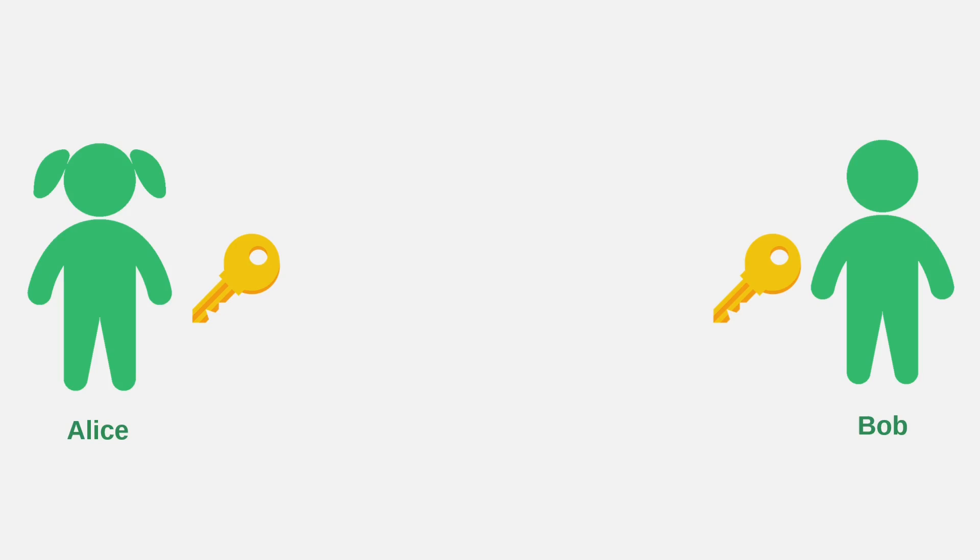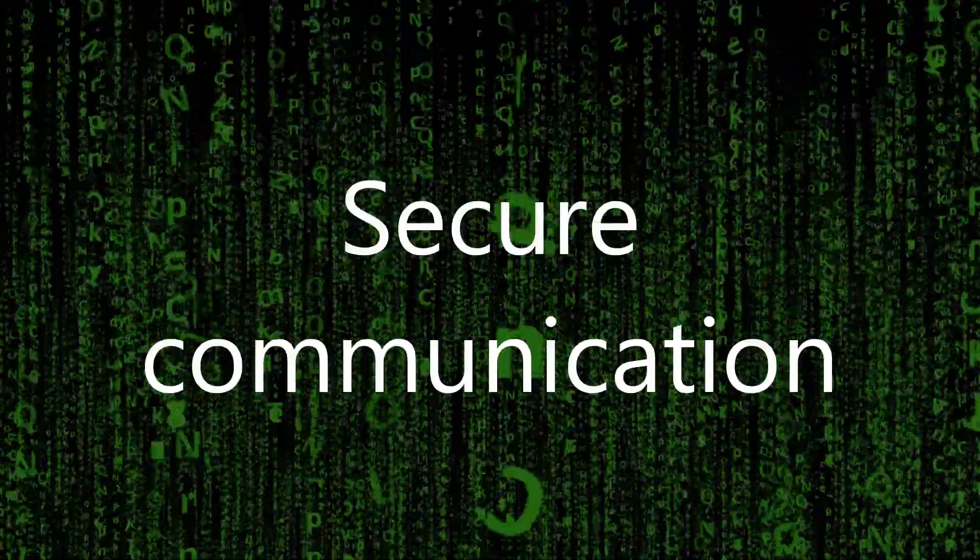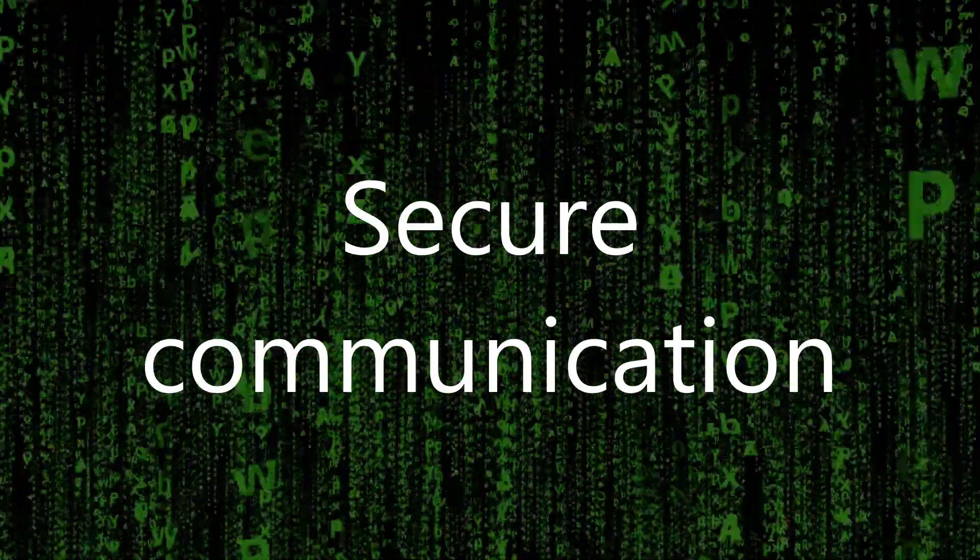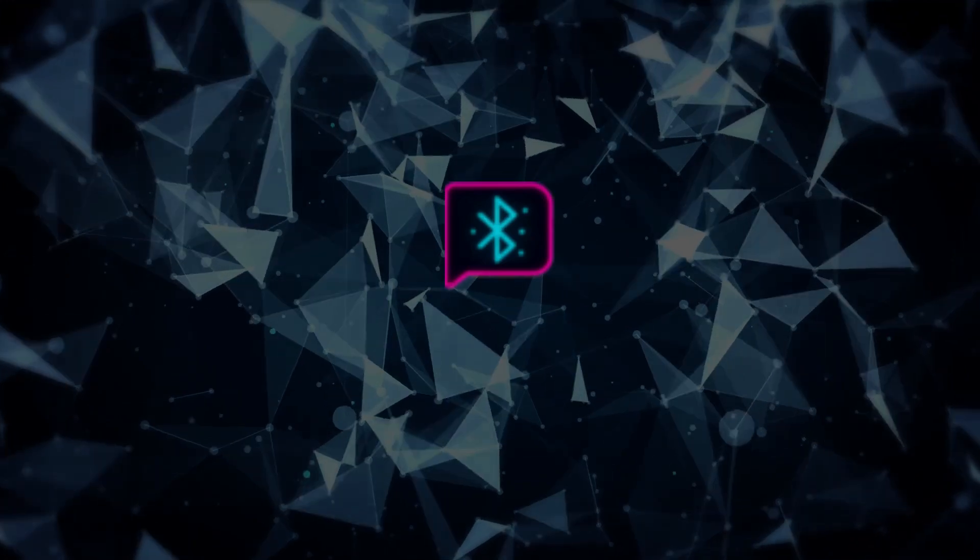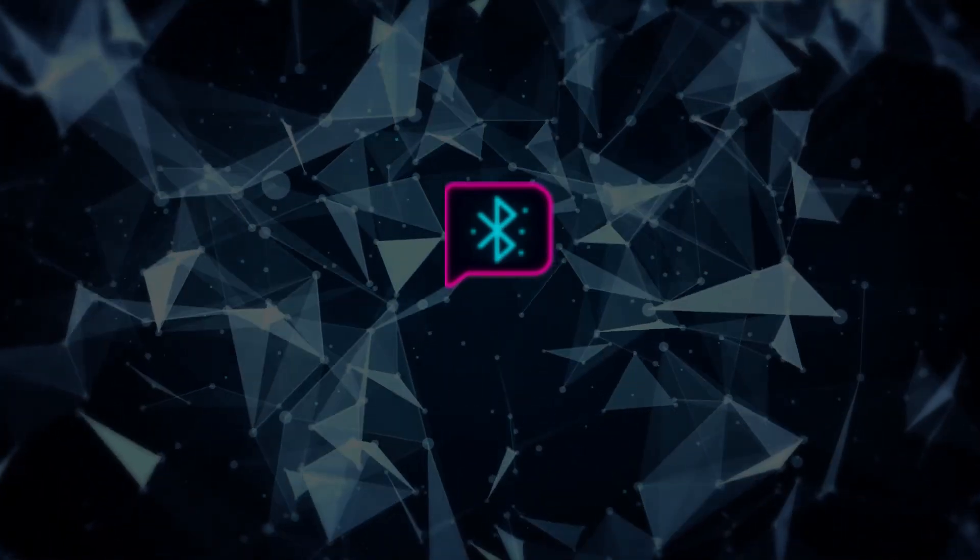Once Alice and Bob derive the shared key, they can use it to encrypt and decrypt their messages. This guarantees secure communication even if the messages travel through multiple relays. This is a high-level overview of how BitChat enables secure P2P messaging over Bluetooth.